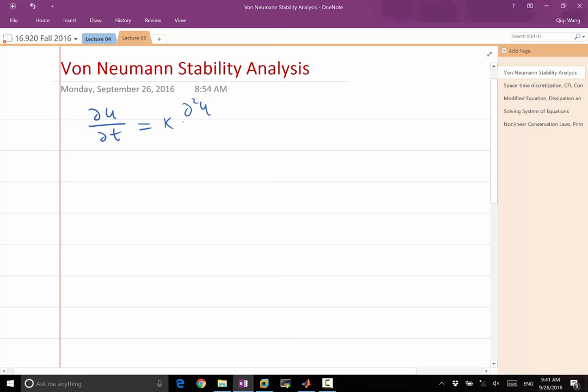The von Neumann stability analysis is not just for any domain. It's for domains without a boundary. So what does that mean? It means von Neumann stability analysis cannot analyze the effect of complex boundary conditions.